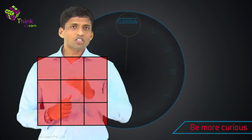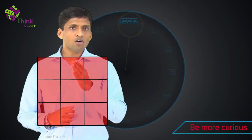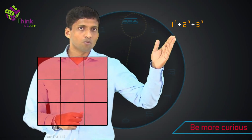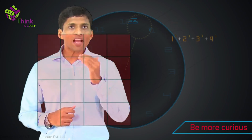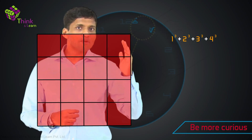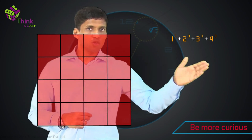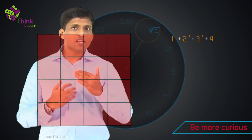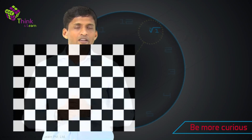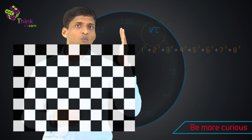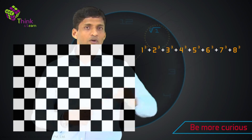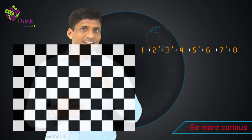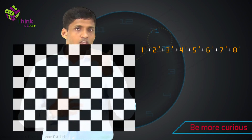If I take a 3 by 3 grid, the total number of rectangles will be 1 cube plus 2 cube plus 3 cube. For a 4 by 4 grid, it will be 1 cube plus 2 cube plus 3 cube plus 4 cube. And for a chessboard, which is an 8 by 8 grid, it will be 1 cube plus 2 cube plus 3 cube up to 8 cube. So why are these two things exactly the same? I will help you understand using the pattern we discussed.